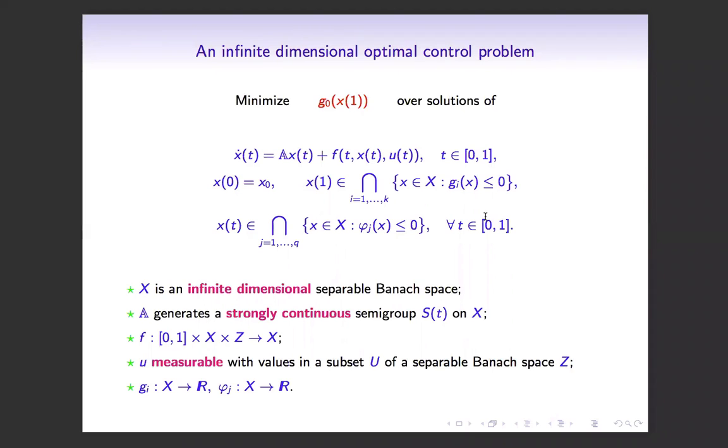We consider a Meijer problem consisting in minimizing a final cost over the solutions of a semi-linear equation satisfying endpoint constraints and running constraints. Here, the trajectory lives in an infinite-dimensional separable Banach space, A is the infinitesimal generator of a strongly continuous semigroup, and the nonlinear term is measurable with respect to time and twice Fréchet differentiable with respect to the two other variables.